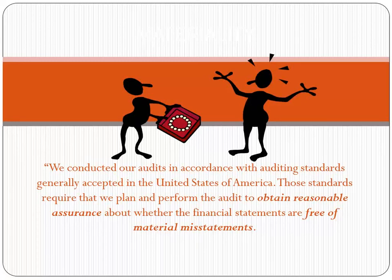Now we're going to talk about materiality. Here we have a cartoon stating: 'We conducted our audits in accordance with auditing standards generally accepted in the United States of America. Those standards require that we plan and perform the audit to obtain reasonable assurance about whether the financial statements are free of material misstatements.' We're going to analyze what these components mean — what exactly is a material misstatement and what is reasonable assurance.